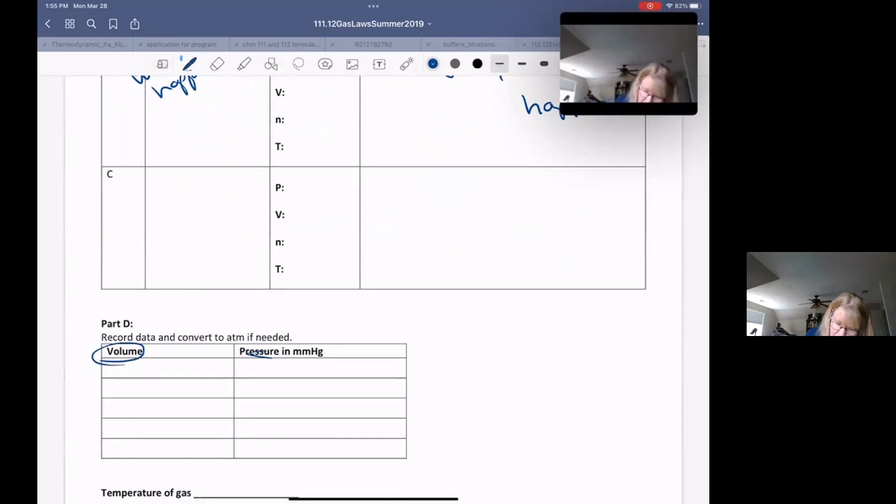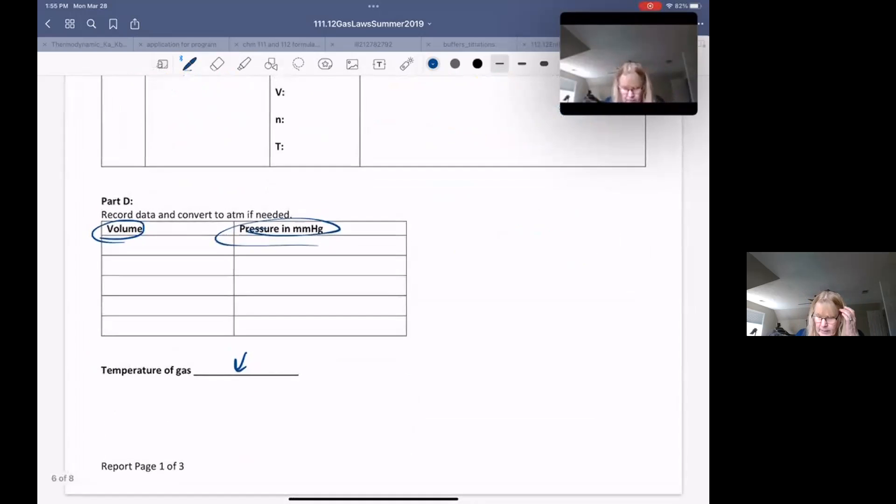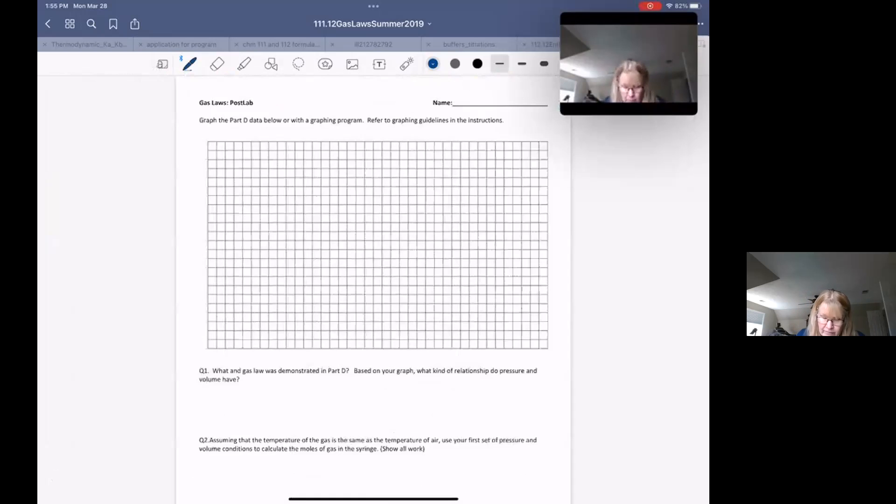All right. You're going to have volume and pressure data. You're going to record the temperature, and so you have all of that information. And then we're going to graph it. You are going to graph your volume and your pressure. And then you are going to re-graph it such that you graph one over volume and pressure. You will have two graphs.